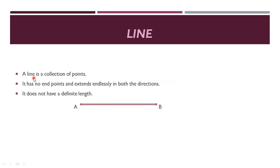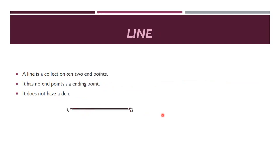Line. A line is a collection of points. It has no end points and extends endlessly in both directions. It does not have a definite length. A line extends endlessly in both directions, either this side or this side, and it will not have any fixed length.